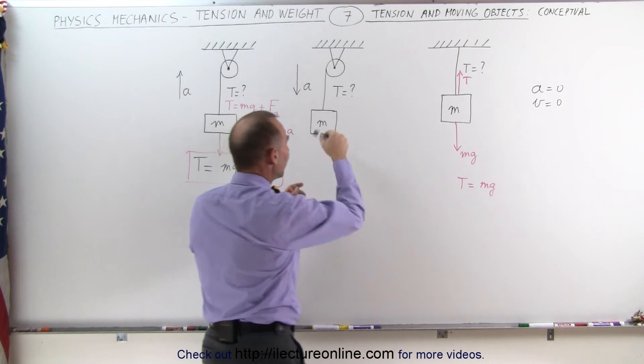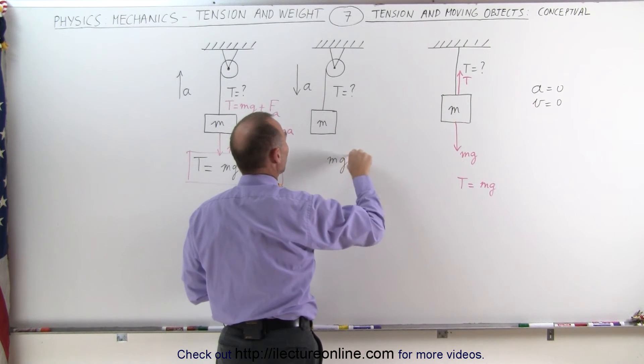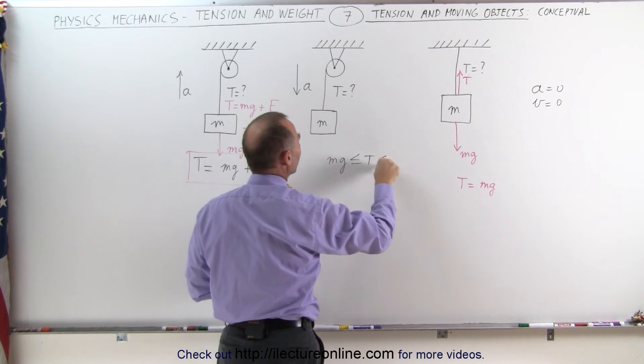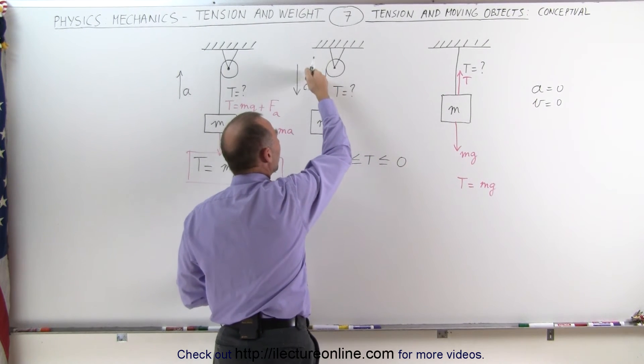So that means that you know that the tension must be somewhere between the weight of the object or zero. In other words, in this case, we know that the tension will be somewhere between MG, will be less than or equal to the tension, less than or equal to zero, for the case where acceleration is either zero or negative.